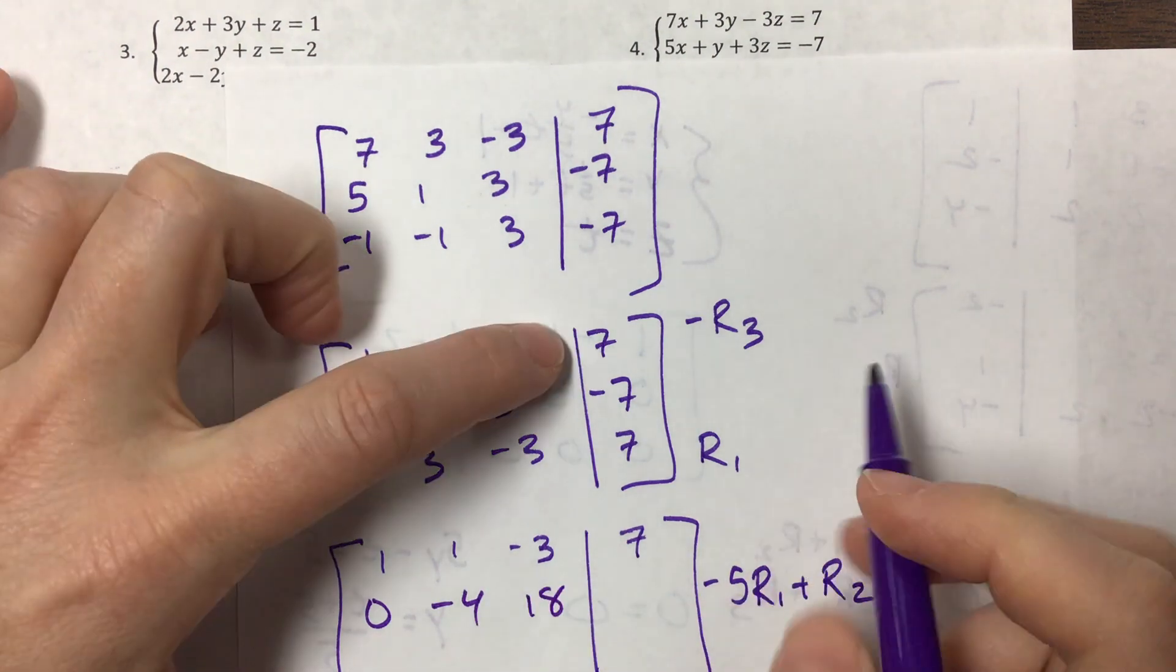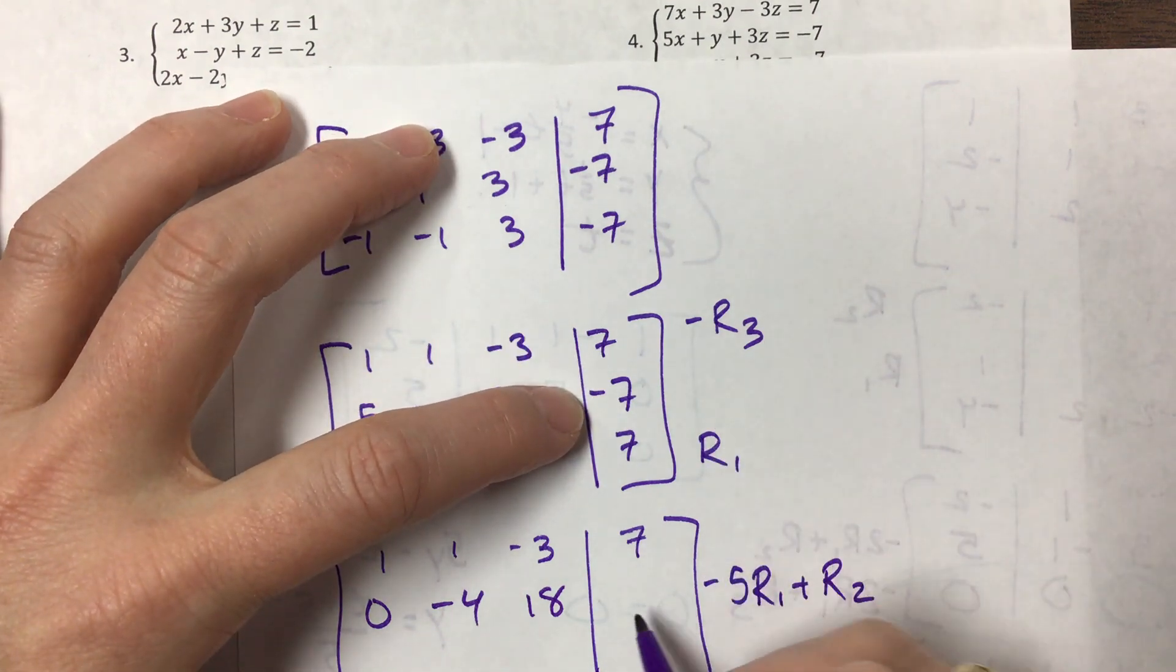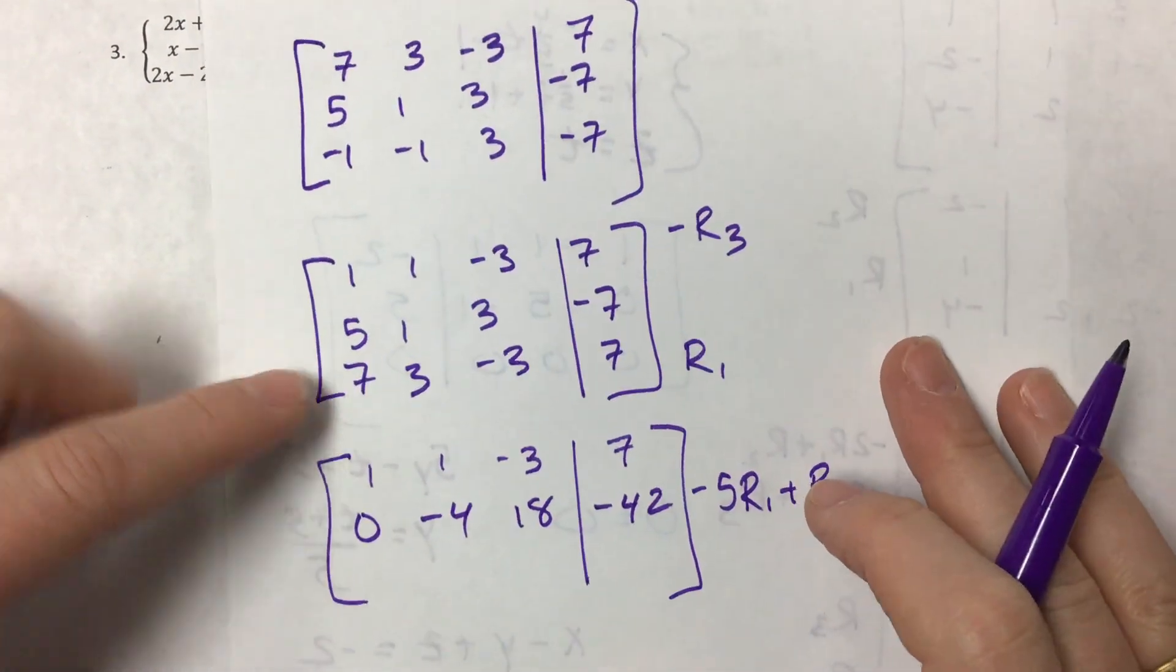Okay, what is that? Negative 35 and negative 7 is negative 42. Fantastic. Okay, now I'm gonna do negative seven times row one plus row three. This one's not very fun.